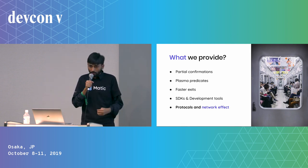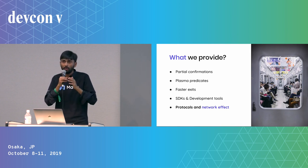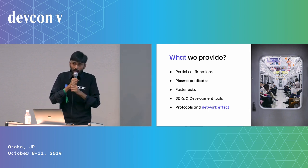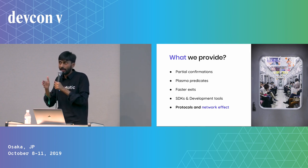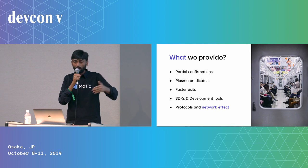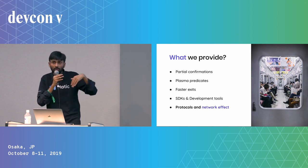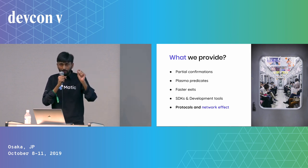There is also a problem in Plasma where exiting tokens from the sidechain to Ethereum takes seven days, because you need to ensure no fraud occurred before exiting instantly. The Plasma framework provides a priority queue when you exit. But what we do is we let you sell your exit directly to a buyer so you get the exit instantly, paying some fees. The other person can just prove your exit is valid. You pay, let's say, 0.09 DAI for one DAI if you don't want to wait seven days. We are building that kind of marketplace for faster exits on our system.